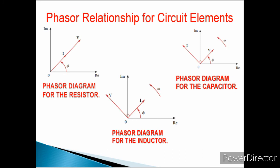This is the phasor relationship for circuit elements — the phasor diagram for the resistor, inductor, and capacitor. The x-axis denotes the real axis and the y-axis denotes the imaginary axis. For the resistor, both the current and voltage are in the same phase. For the inductor, the voltage leads the current by 90 degrees, while for the capacitor, the current leads the voltage by 90 degrees. Later I will tell you how to easily recall this phasor relationship.